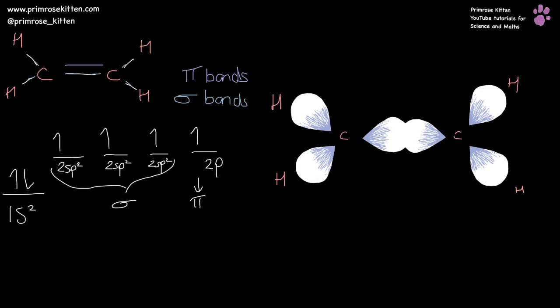Now we need to deal with this 2P orbital, which is going to make our pi bond. Now if we draw our pi bond in, we would draw it coming off the carbon. This is going to be slightly wonky — you have to remember that I'm drawing this in 2D, whereas in reality it happens in 3D. The orbitals can be coming off here like this — that's the top of the orbital — and then down there, that's the bottom of the orbital. This is all one big orbital.